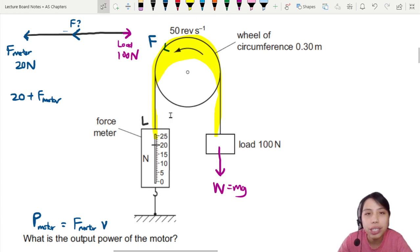What's pulling it down to the left or towards the newton meter is 20 and the motor force. In the opposite direction, pulling it down clockwise, is the load pulling it to the right—100.